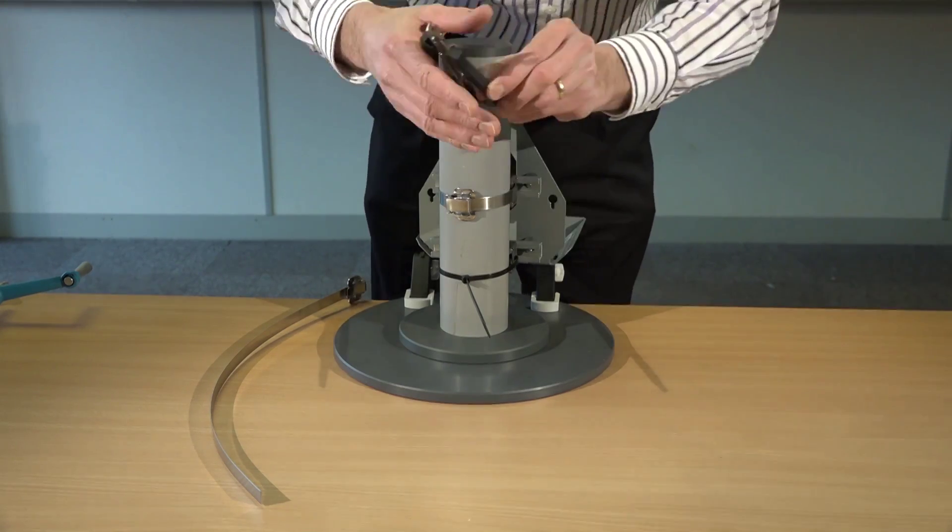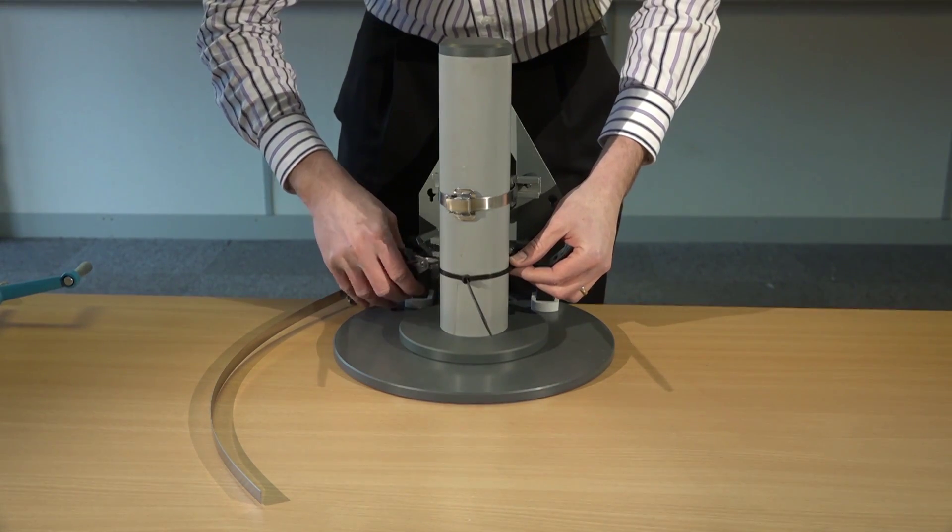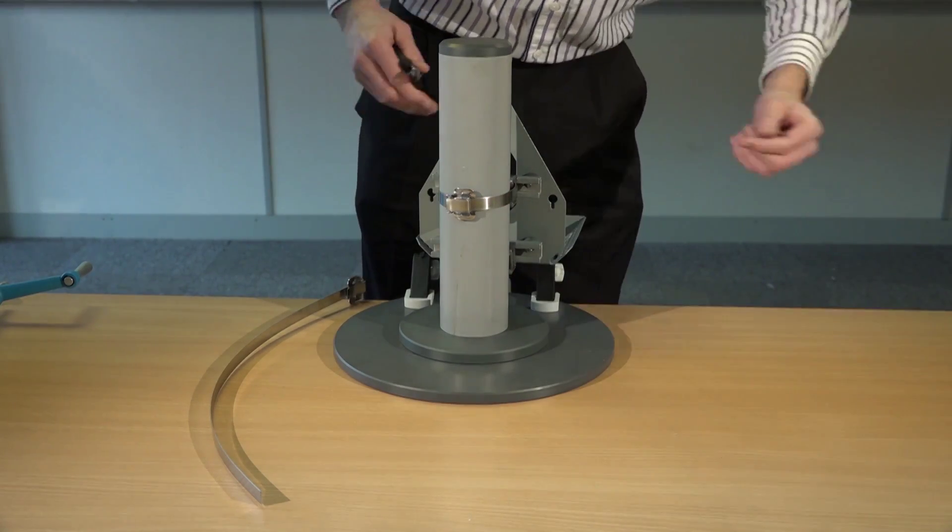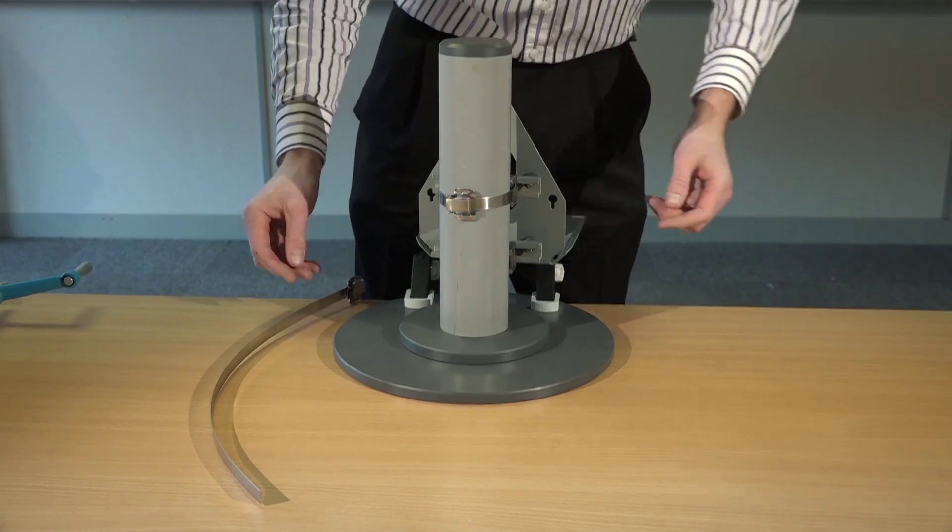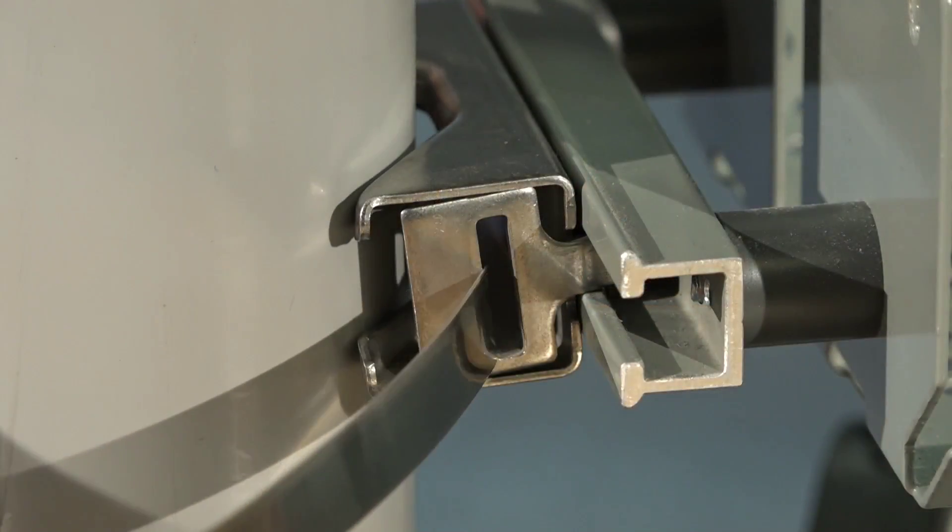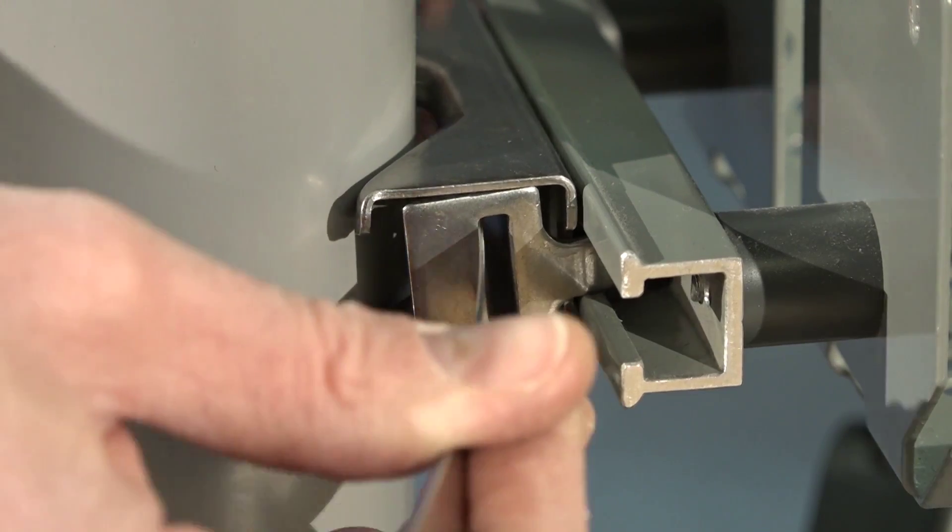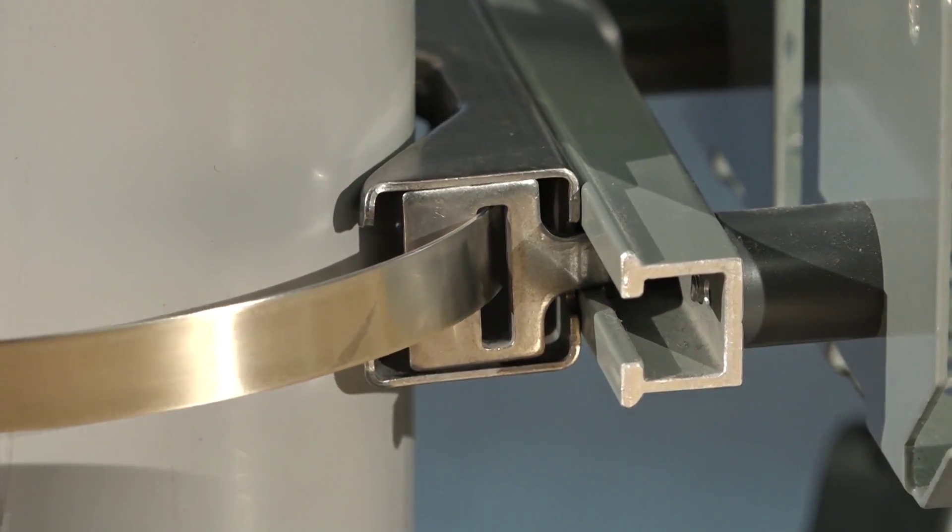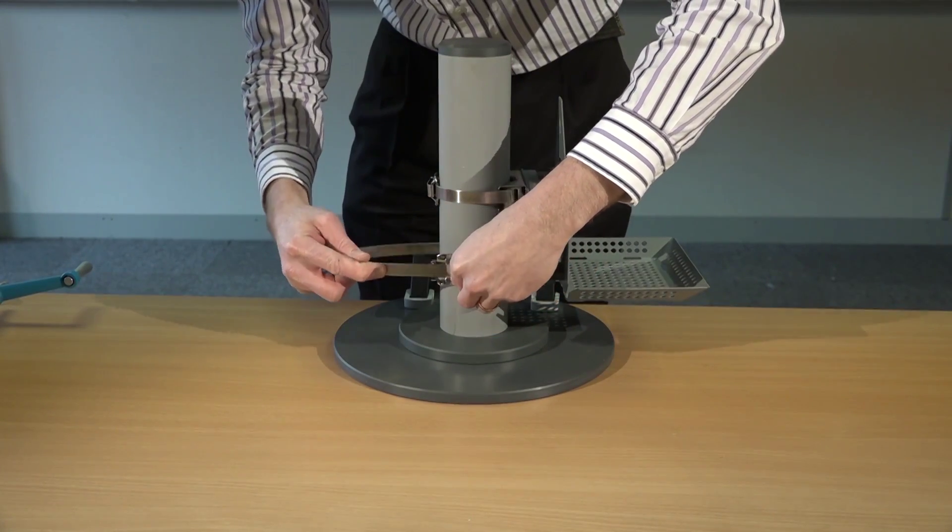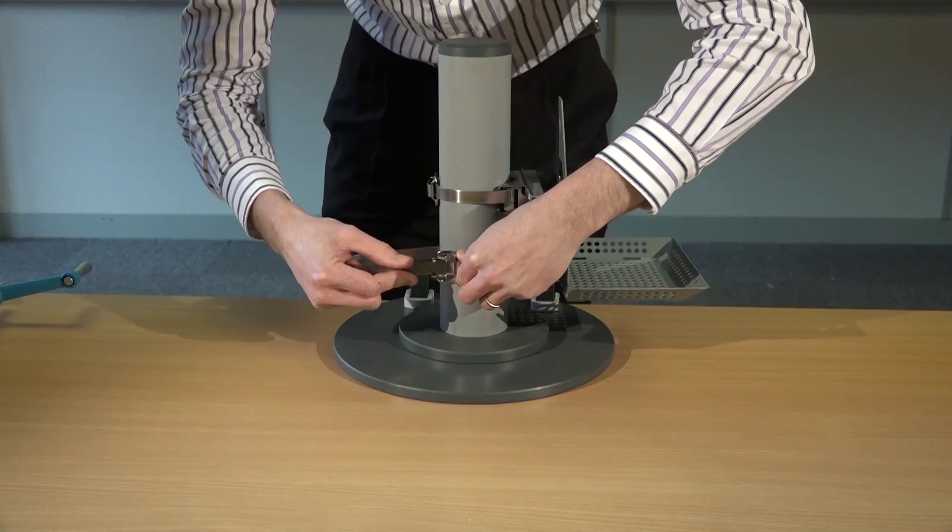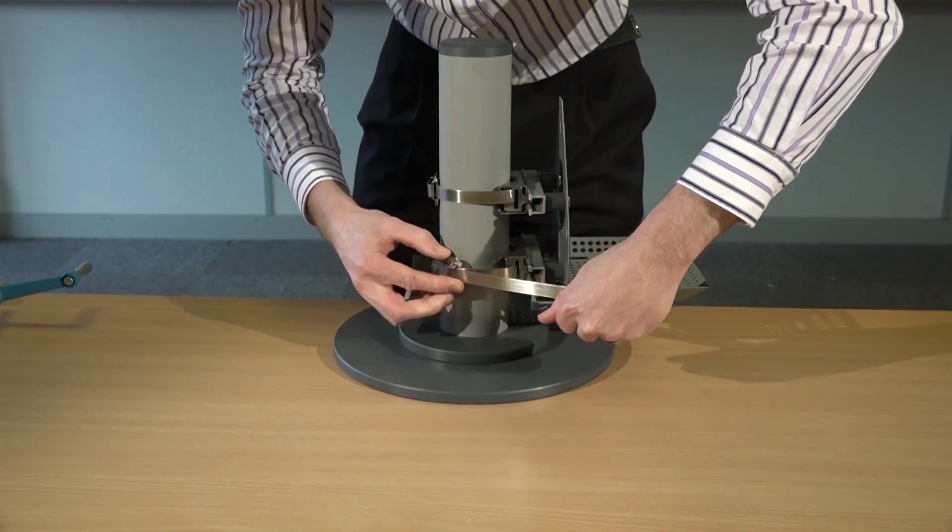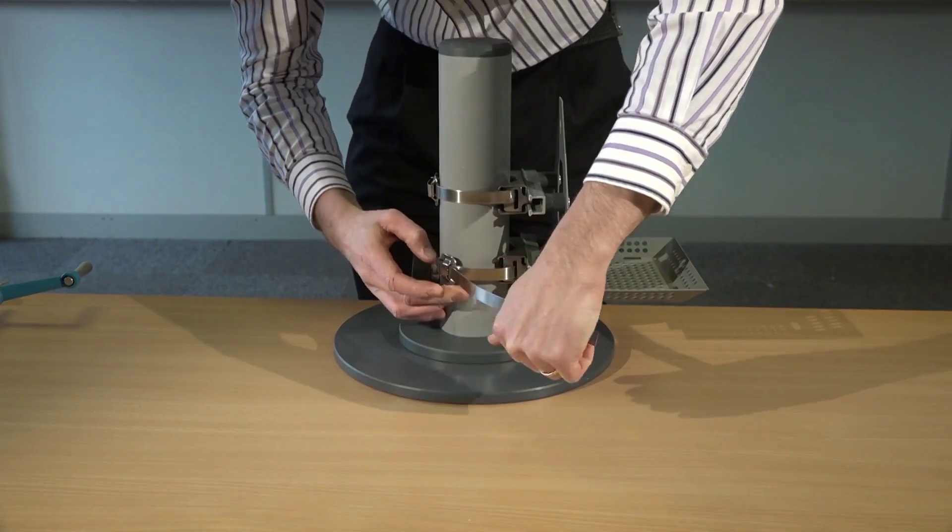From here, remove the temporary installation cable tie and repeat the exercise with the second band. So again, through the post clip, pull it through the fixing buckle, pulling finger tight.